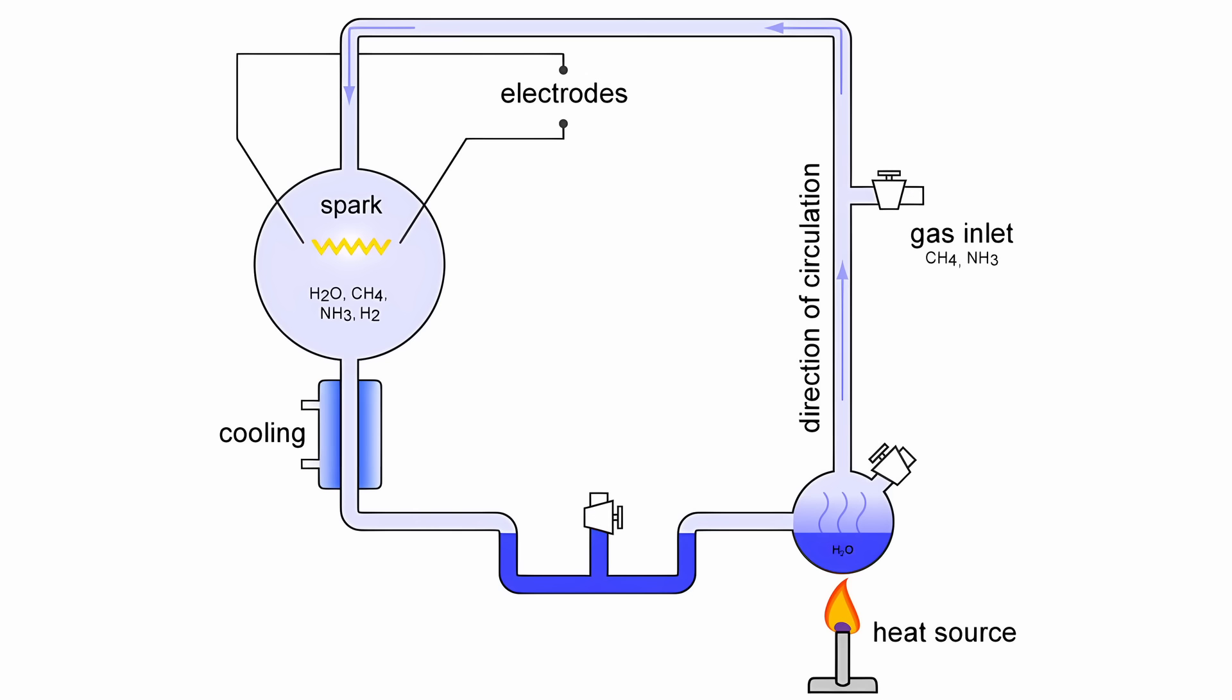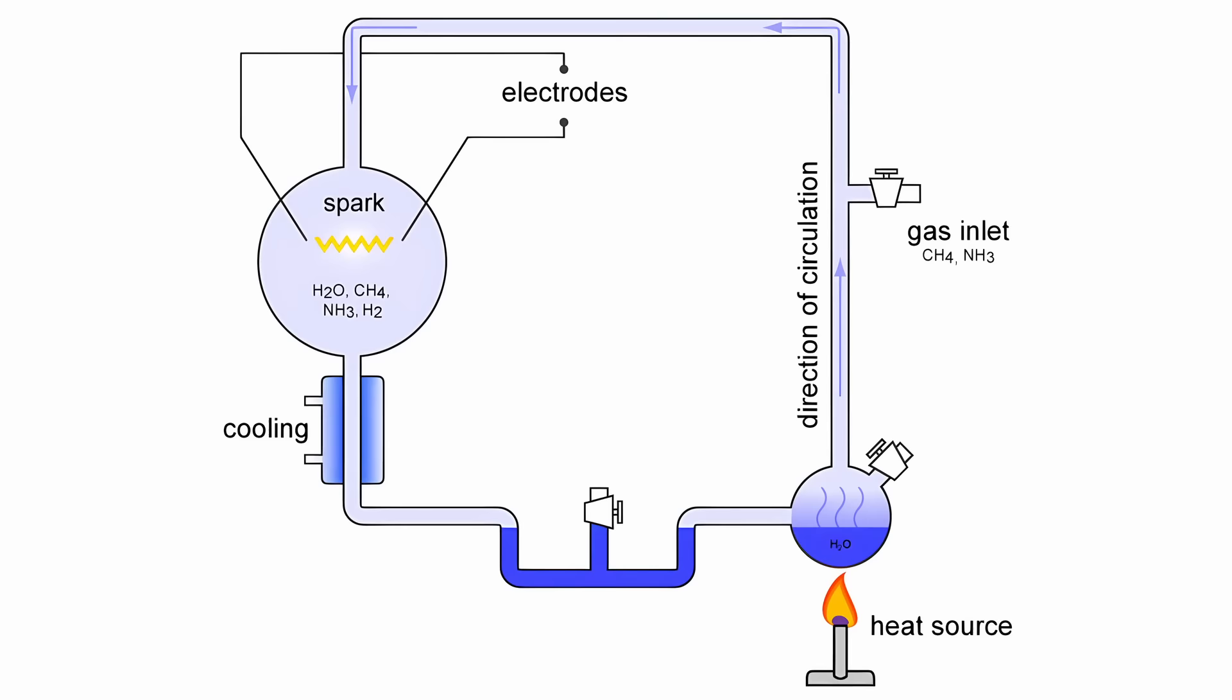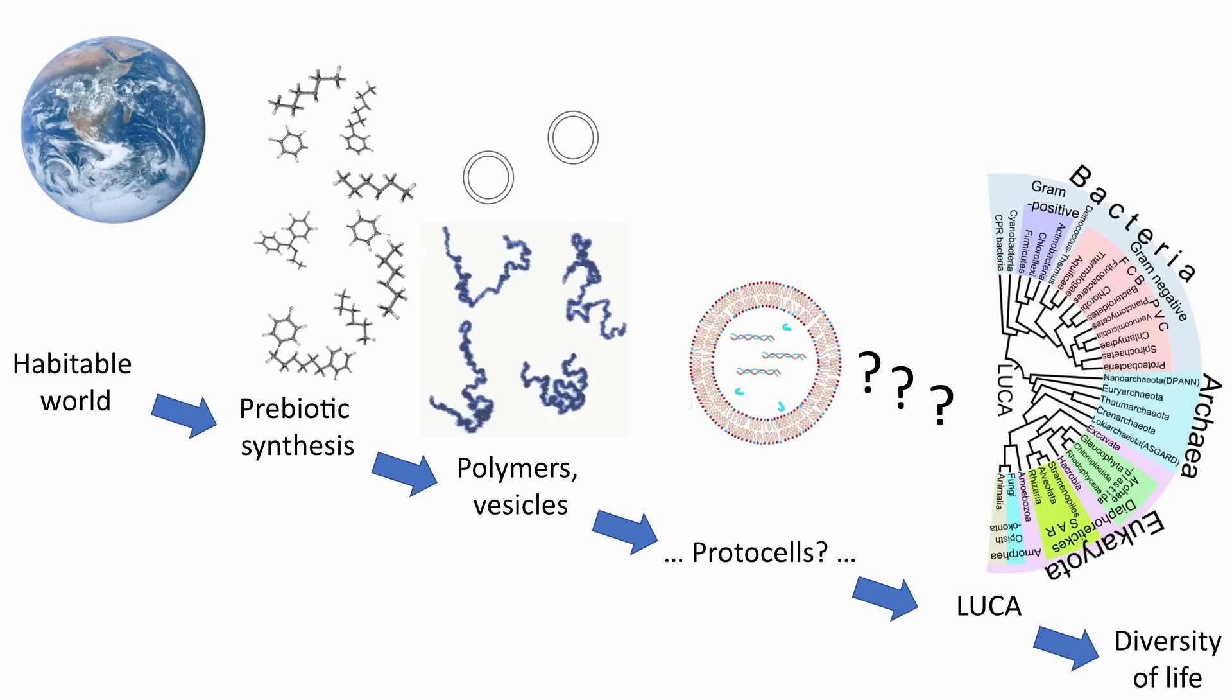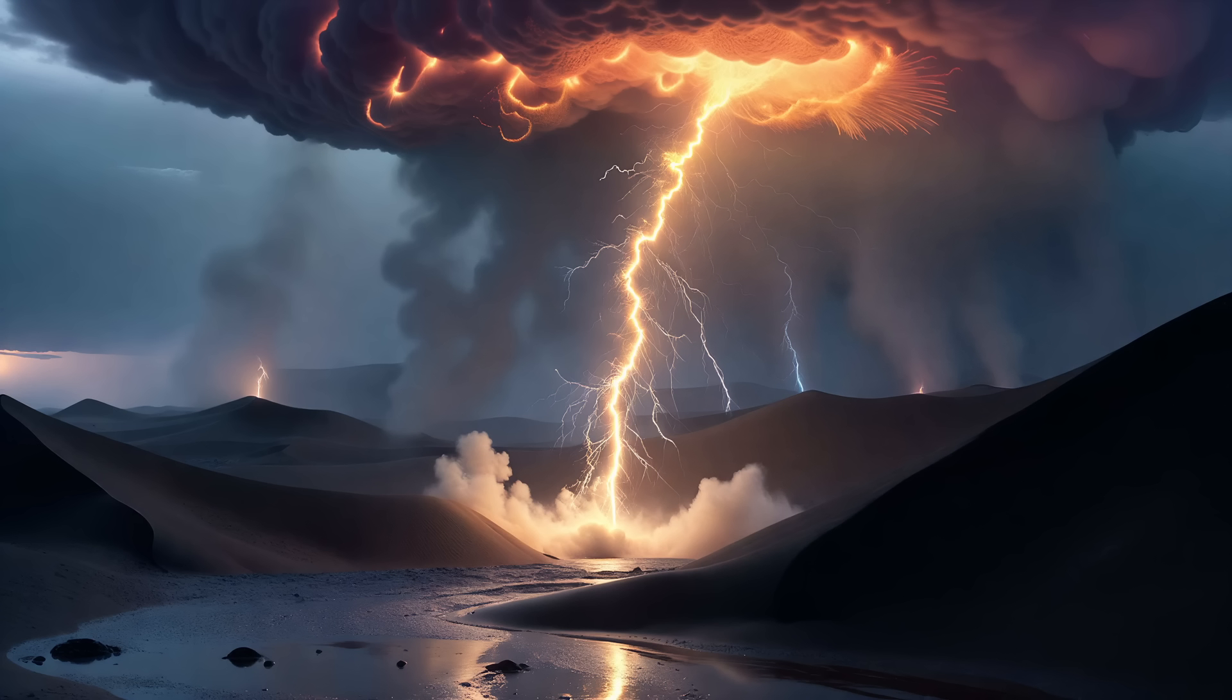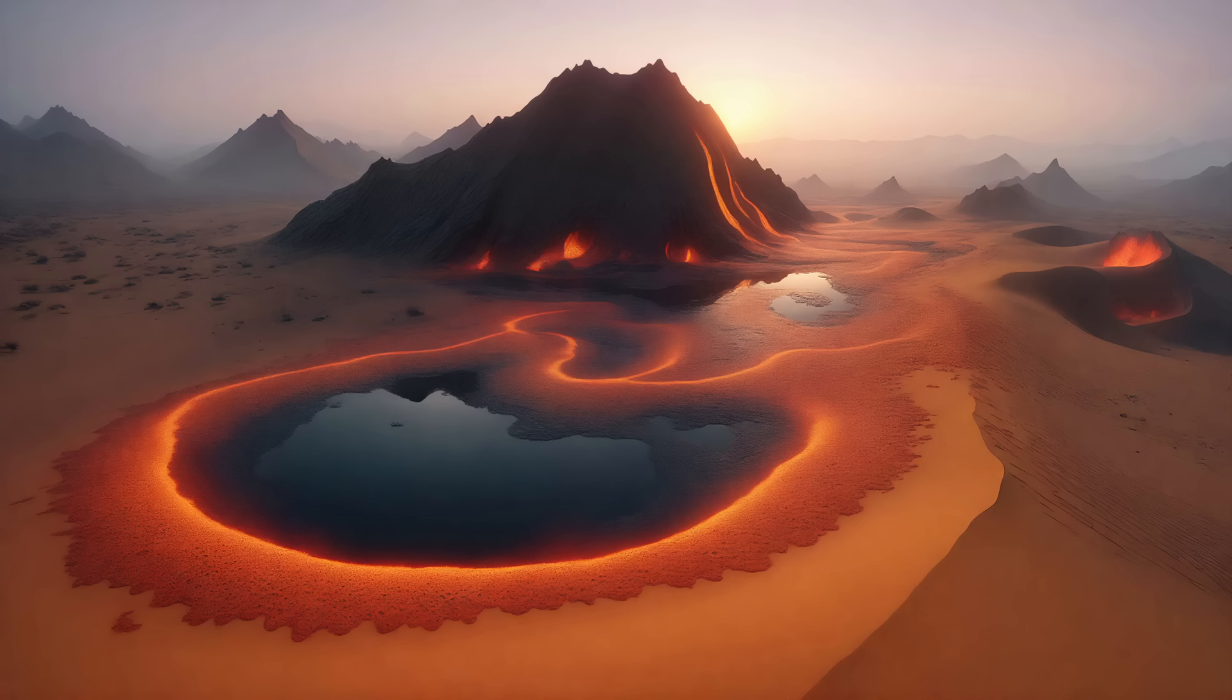Over the course of just a few days, Miller observed significant chemical reactions occurring within the equipment. These reactions led to the formation of a variety of organic molecules, including amino acids. Amino acids are the building blocks of proteins which are essential for life as we know it. The Miller-Urey experiment demonstrated that organic molecules which are vital for life could potentially form spontaneously under the right conditions.